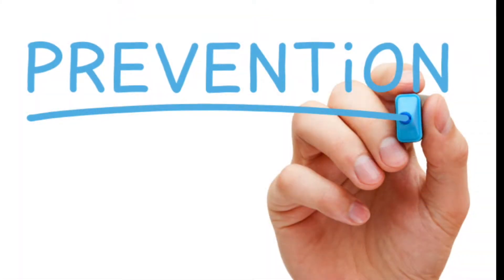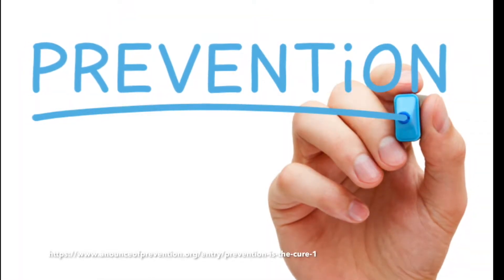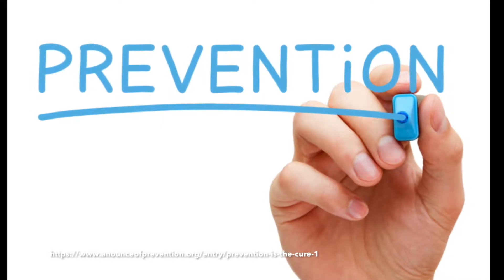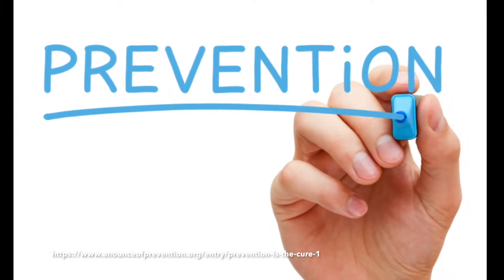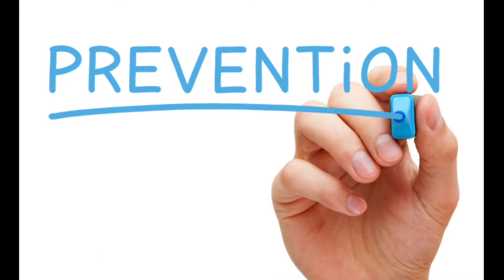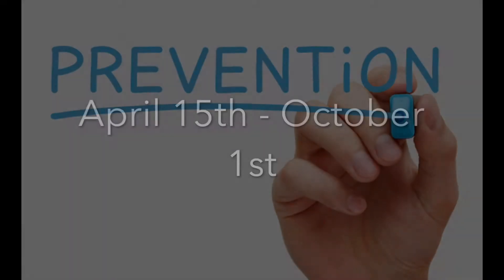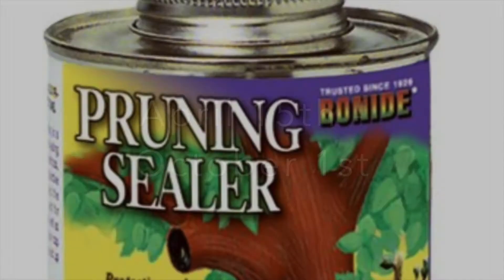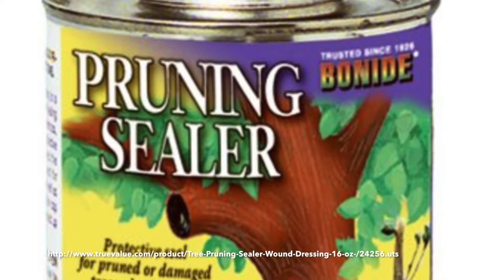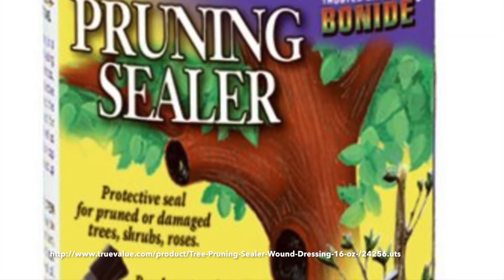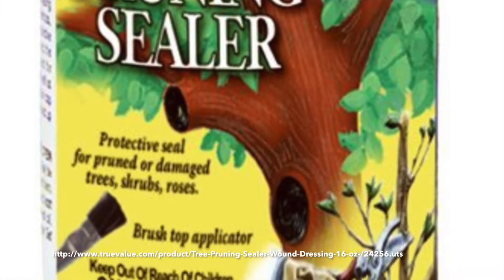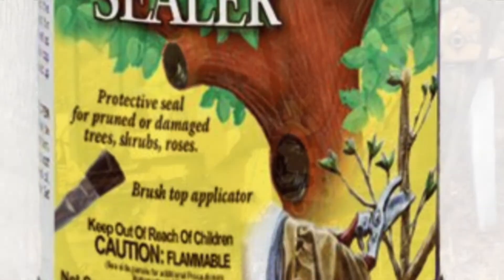Oak wilt is controlled and managed through a preventative approach by interfering with the disease cycle. Overland spread can be interrupted by restricting tree wounds and pruning between April 15th to October 1st. If pruning is necessary during this time, wound dressing needs to be applied to wounds with latex paint to deter beetles from landing and penetrating wounds.